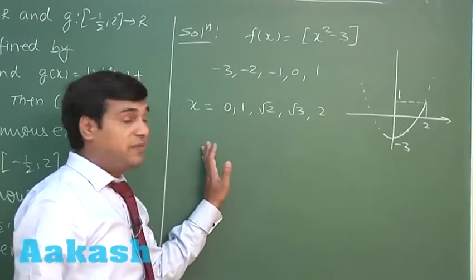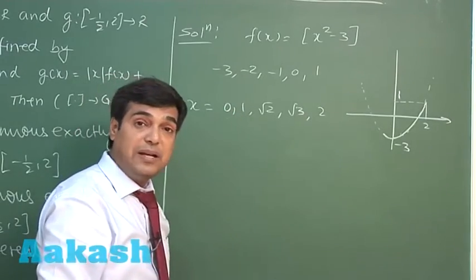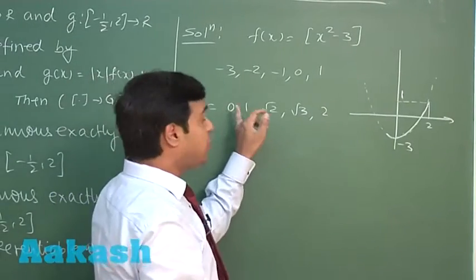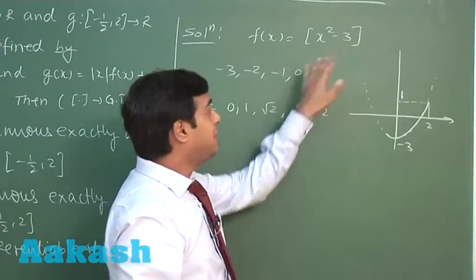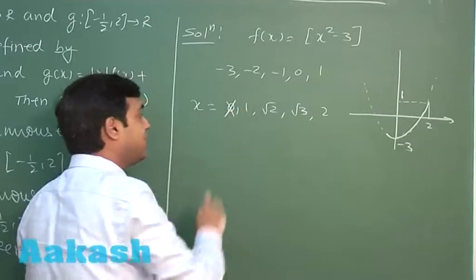Now, out of these five points, we can see when we check the continuity around the point 0, when x is approaching to 0 from left or right, it is going to give me the same result. Hence, this becomes continuous at the point.